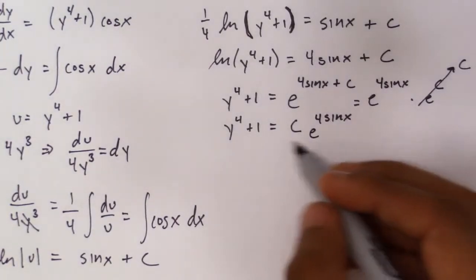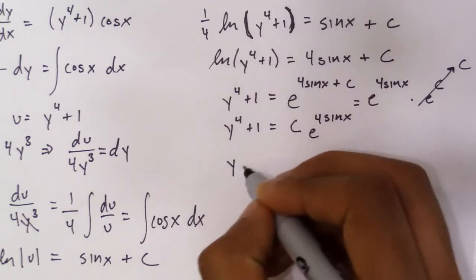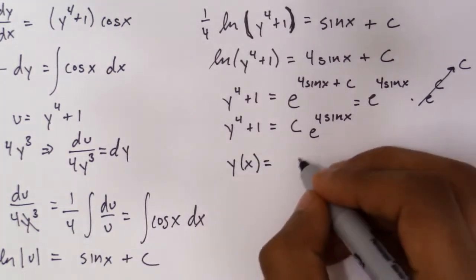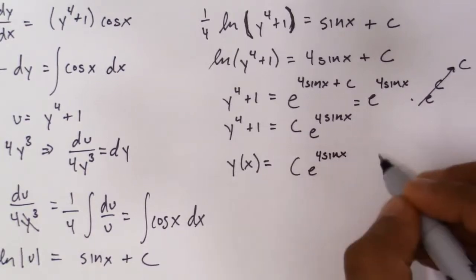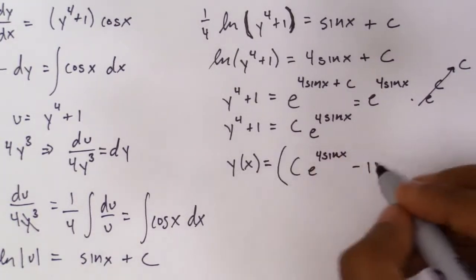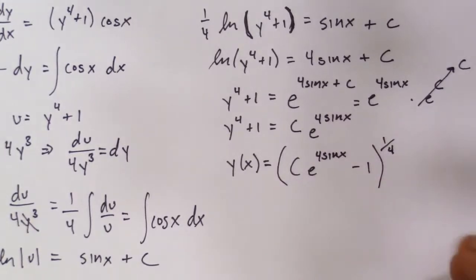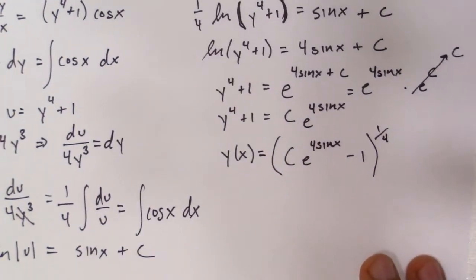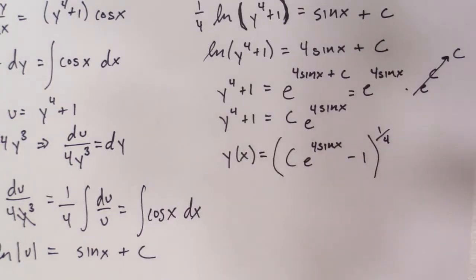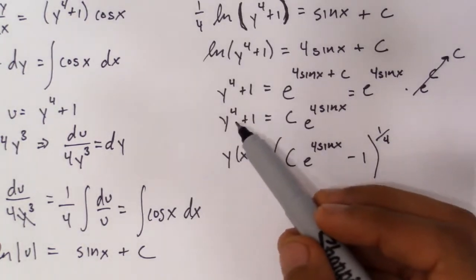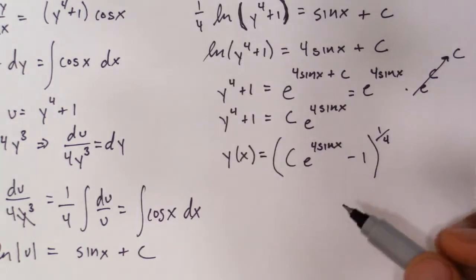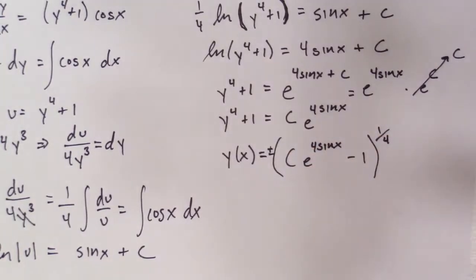We could subtract one and take the fourth root of this. So it would be y(x) equals (C e^(4sin x) - 1)^(1/4). And I forgot one minor detail—it's actually quite major. But since this is an even exponent, you can never forget your plus or minus. So actually this is plus or minus. So you have all the solutions within the formula. And now this is your general solution.